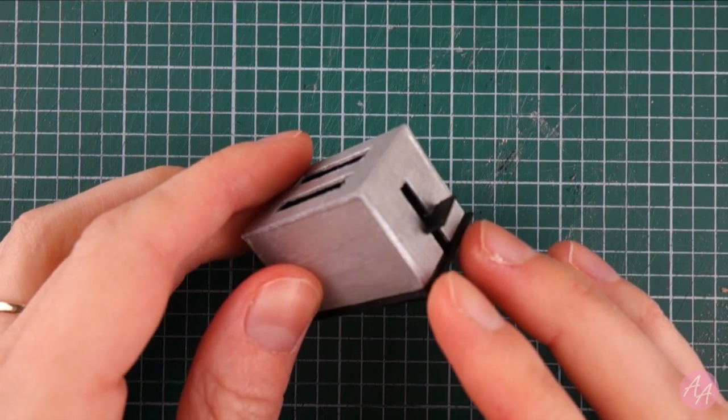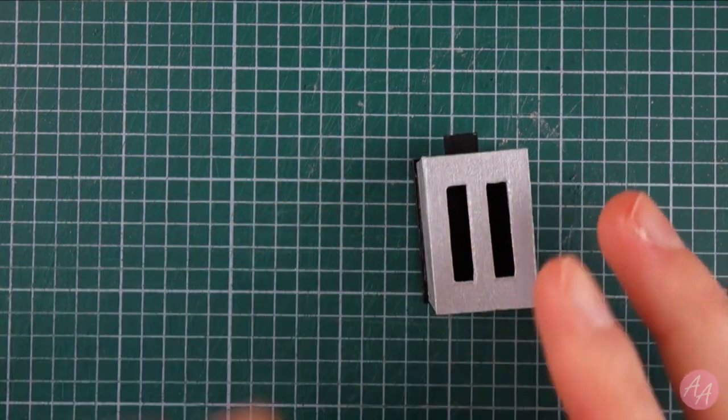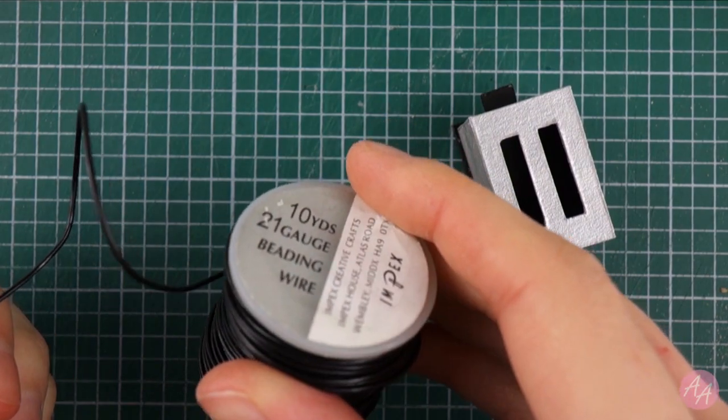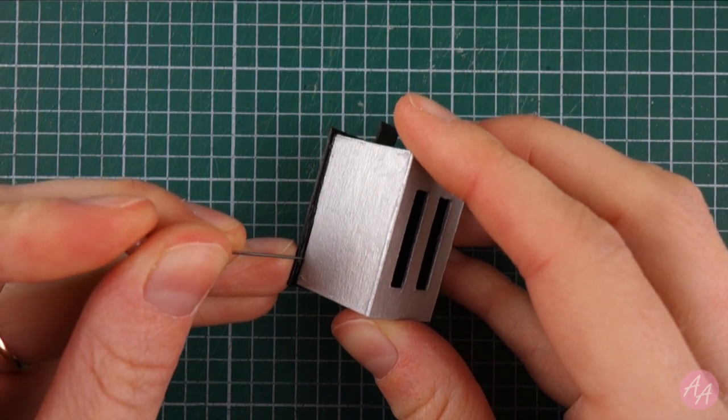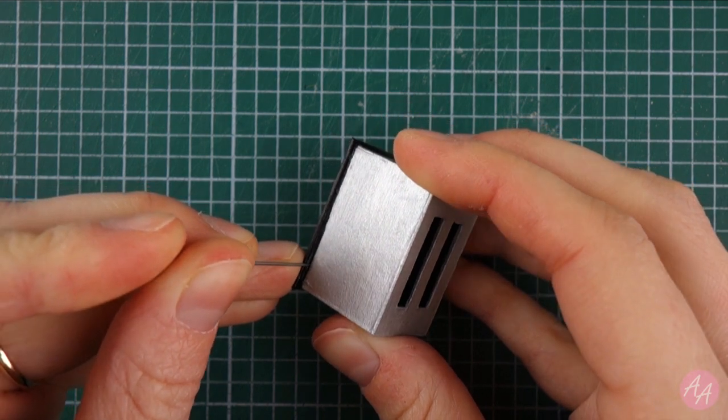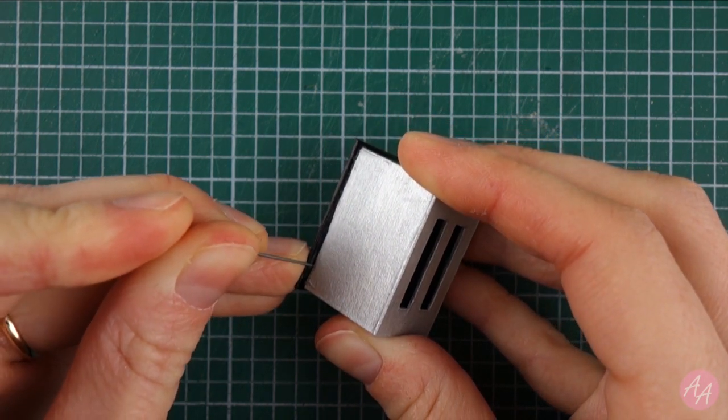And finally, I'm going to add some wire coming out of the back of the toaster. After cutting a piece of wire to the size I want, I need to make a hole in the toaster with a pin, which I can then poke the wire through.